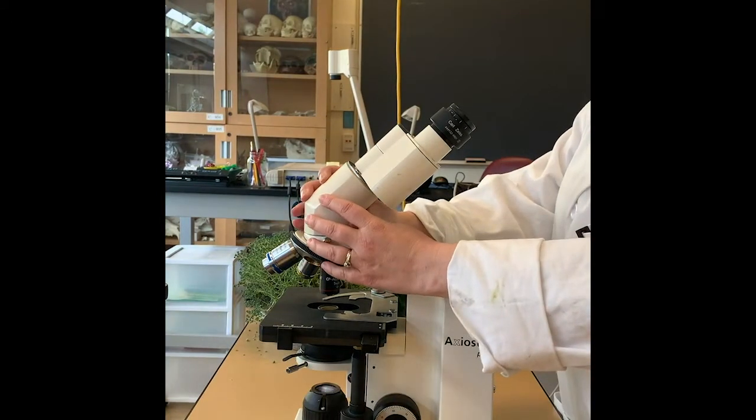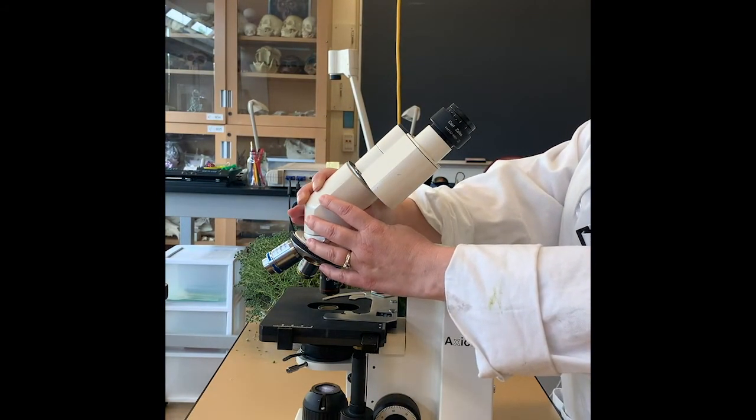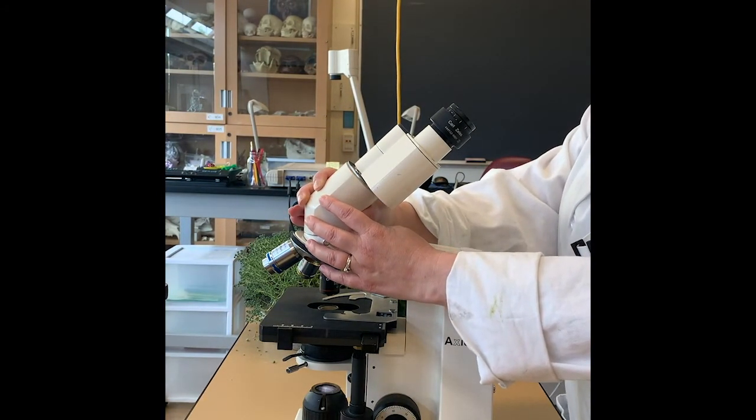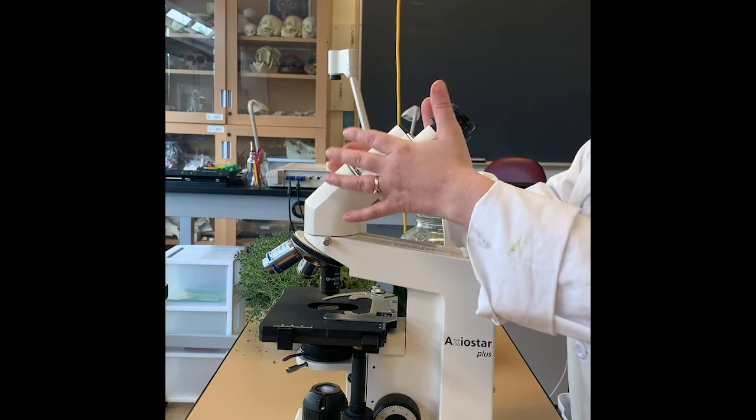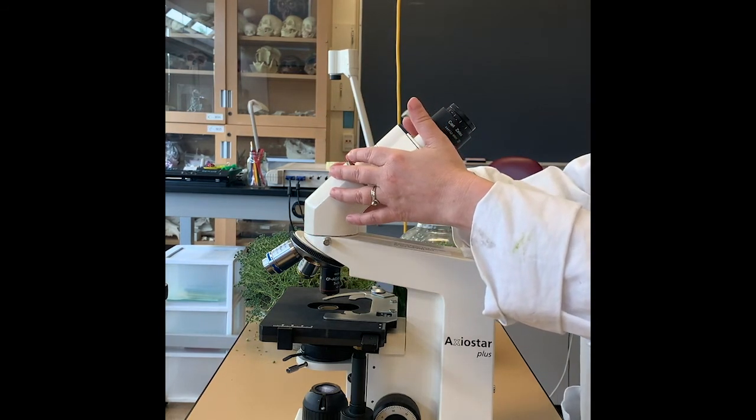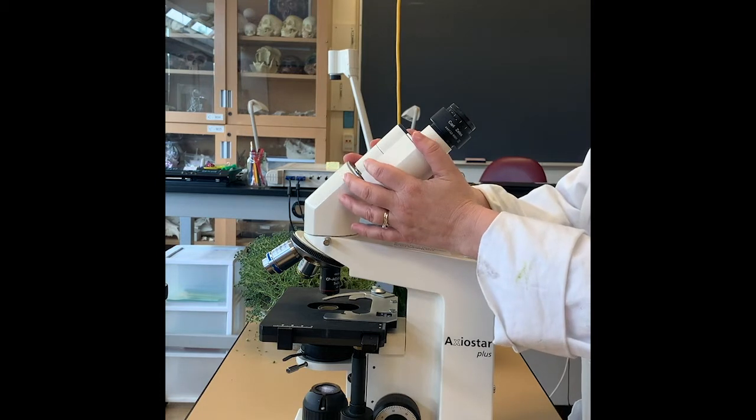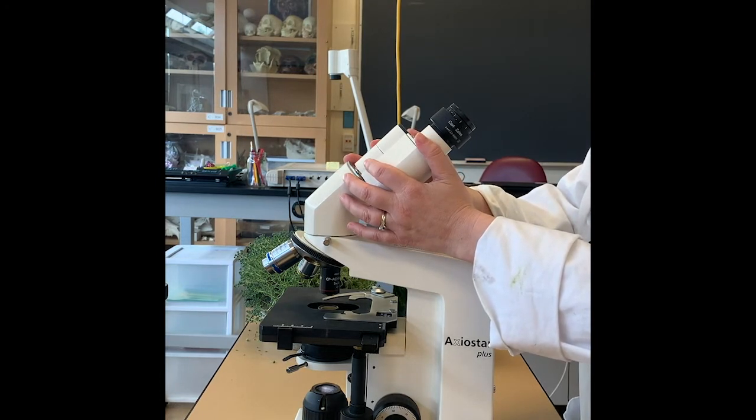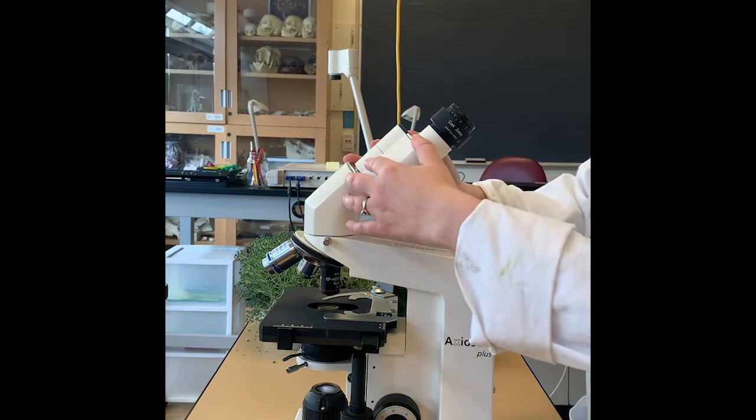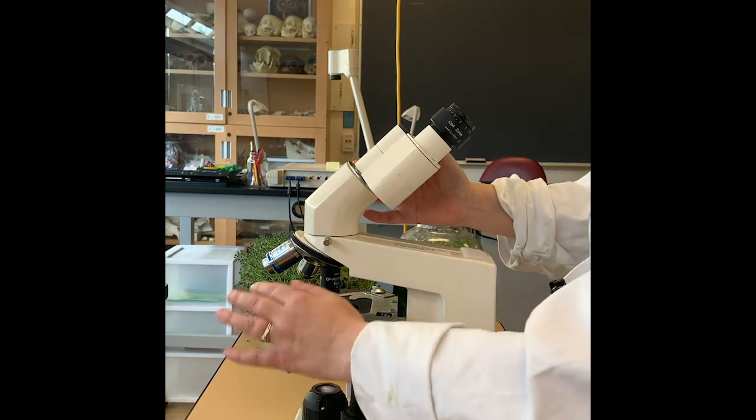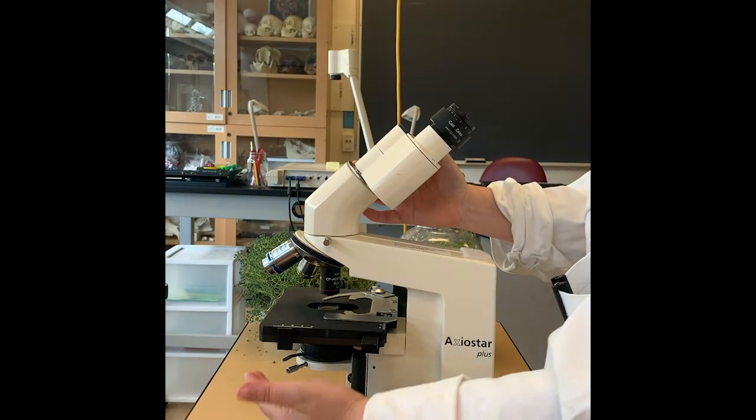The top part of the microscope that holds the ocular lenses can be used two different ways. It can be used the way we have it right now, facing away from the controls. This way was traditionally used in the situation where you might want an external light source shining down on your specimen or shining up on it.